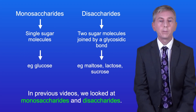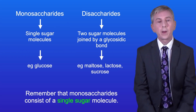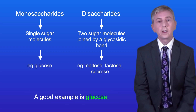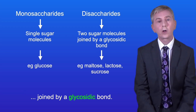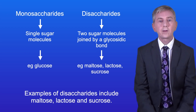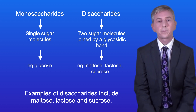In previous videos we looked at monosaccharides and disaccharides. Remember that monosaccharides consist of a single sugar molecule and a good example is glucose. Disaccharides consist of two sugar molecules joined by a glycosidic bond. Examples of disaccharides include maltose, lactose and sucrose.